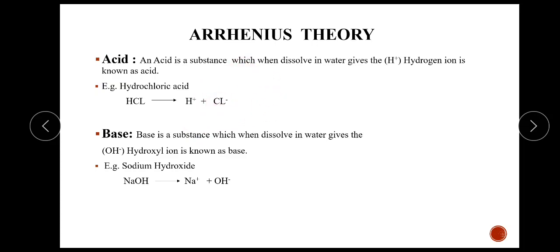Then next is the base according to Arrhenius theory. Base is a substance which, when dissolved in water, gives OH- ions — that is, the hydroxyl ion. Example is sodium hydroxide, NaOH, which gives Na+ and OH- ions.